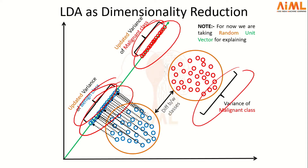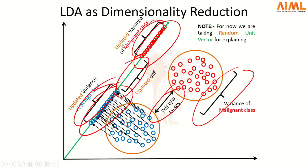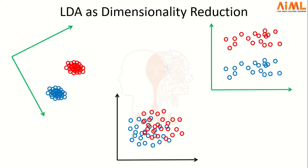This width is less than the original width. The difference between the projected data points has also increased — this difference is less before projection whereas this difference is more after projection. Both criteria are getting satisfied.